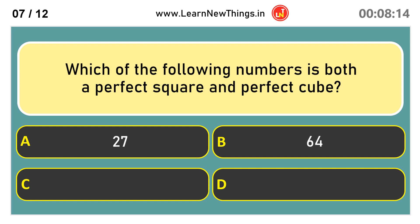Which of the following numbers is both a perfect square and a perfect cube? 64.